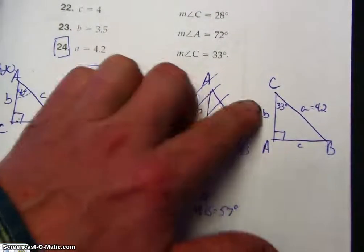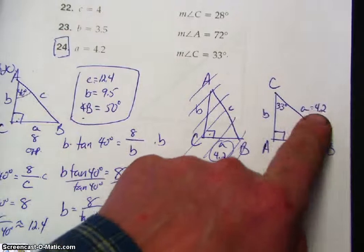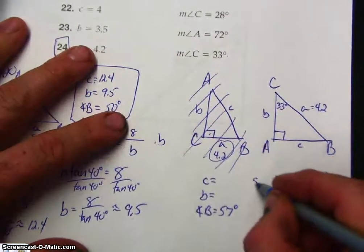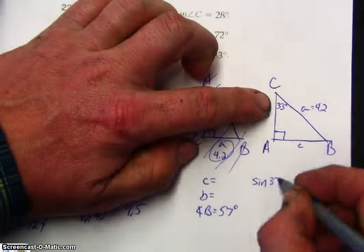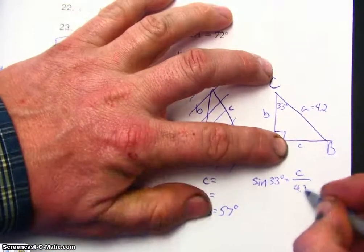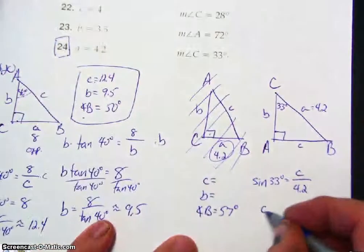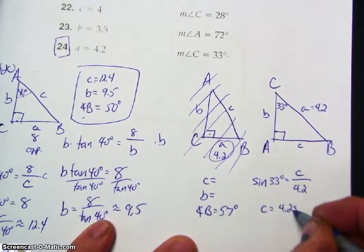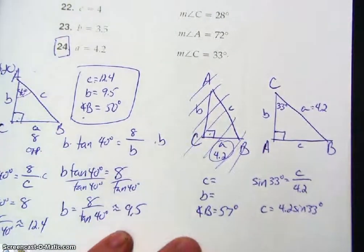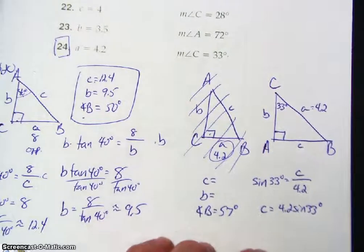All right, it doesn't matter which one you want to find, but you have to always use the hypotenuse. That means there's going to be sine or cosine. So let's do sine of 33 degrees is equal to C over 4.2. So C is equal to 4.2 sine of 33 degrees. Make sure you're in degree mode. That gives me 2.3.